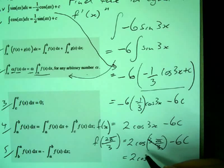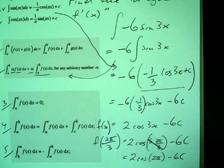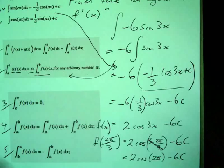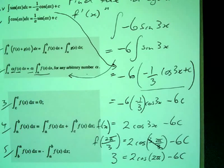The 3s go away. I get 2 cos 2π take 6c. And what were we told that f at 2π over 3 equaled? 3. So now I've got that equation.